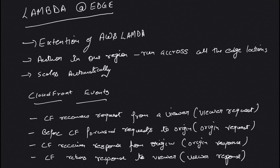Welcome back to the channel. In this video we are going to talk about Lambda at Edge. Lambda at Edge is just an extension of the AWS Lambda service. If you are not aware of Lambda, you can check out my videos on AWS Lambda. Basically Lambda is a way of running your code on AWS infrastructure without provisioning any infrastructure — AWS takes care of that, you just provide the code.